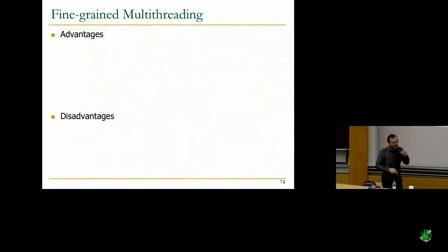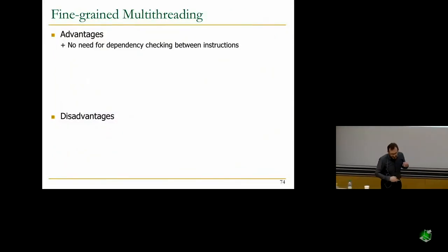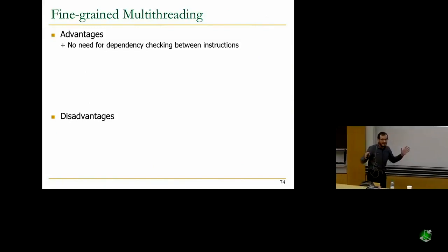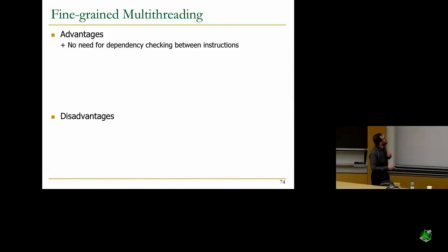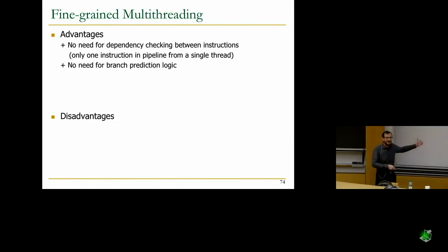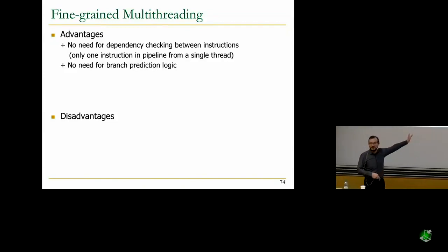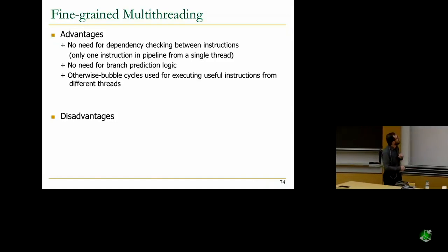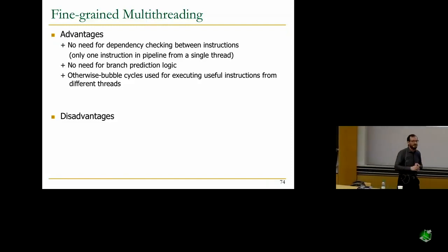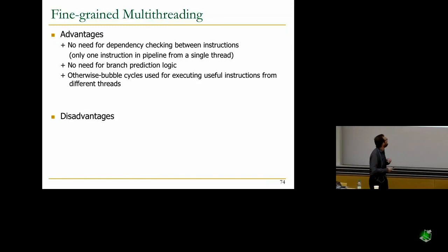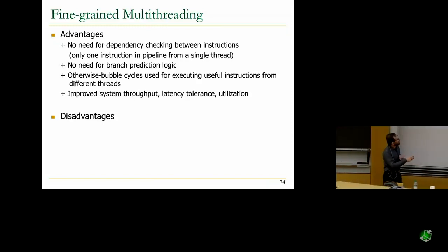What are the advantages and disadvantages? The big advantage is there's no need for dependency checking for anything within a single thread. Only one instruction in the pipeline from a single thread. No need for branch prediction logic as a result. We got rid of all that complexity. GPUs are beautiful because they don't have any of that branch prediction and dependency checking complexity. They have other complexities in the memory system. Otherwise bubble cycles are used for executing useful instructions from different threads. Otherwise you would have a bubble. Why don't we execute instructions from different threads? You improve system throughput, you improve latency tolerance, and you improve utilization.